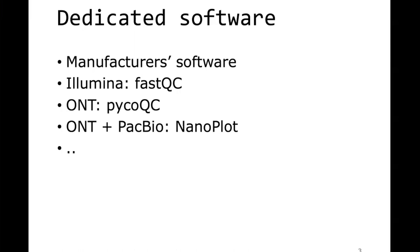For Illumina, by far the most frequently used quality control software is FastQC — that's also the software we will be working with during the exercises. For Oxford Nanopore technology, PycoQC might be interesting; it has really nice visualizations, for example about the number of active pores and pore activity. Nanoplot is a nice general quality control software for both Oxford Nanopore technology and PacBio. It's relatively lightweight and easy to use, so it's great for a first glance at your data.